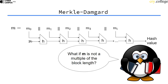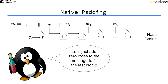Well, then we need padding. One naive approach to padding would be to just fill the message with zero bytes until it's a multiple of the input size of the compression function, because then we can just feed all blocks into the compression function.